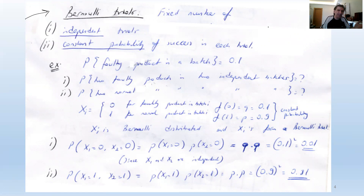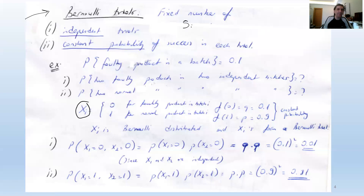When we apply a series of Bernoulli experiments one after another, we call it Bernoulli trials. The conditions are: trials must be independent and there must be a constant probability of success in each experiment. We use Xᵢ to denote the result of the i-th experiment, where heads maps to 0 and tails to 1.